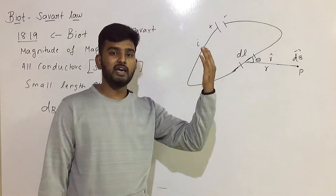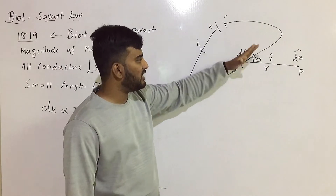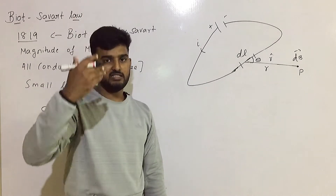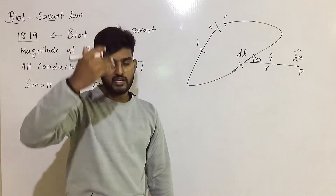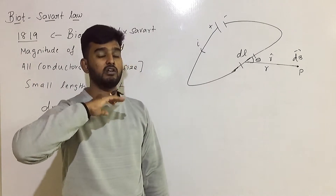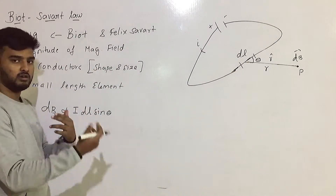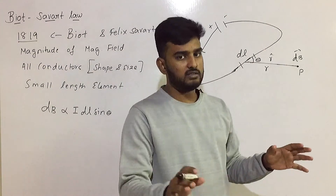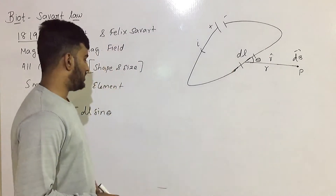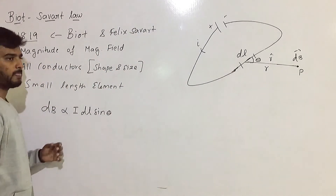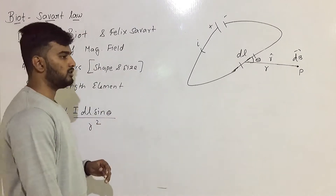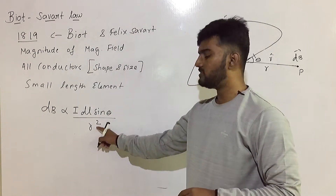Using the x-axis and y-axis, we can resolve the components. dB is directly proportional to i·dL·sin theta along the y-axis, and dB is inversely proportional to the square of the distance r between the length element and the point.